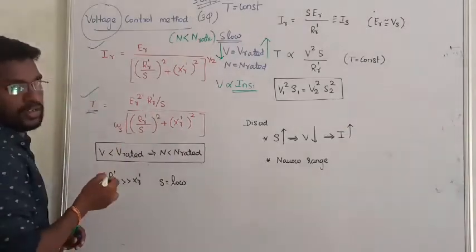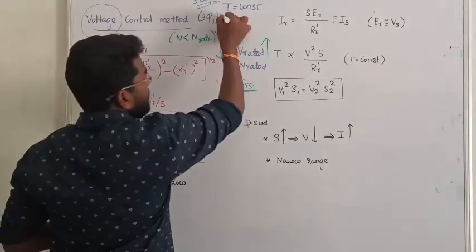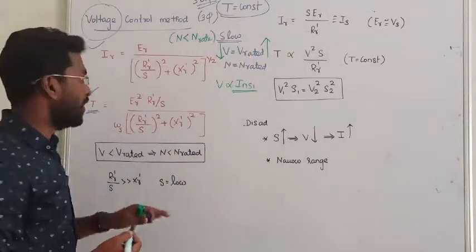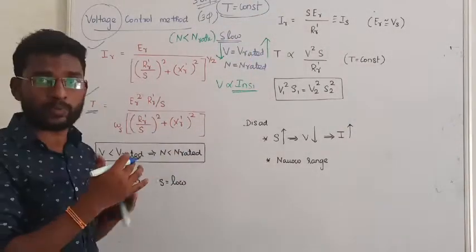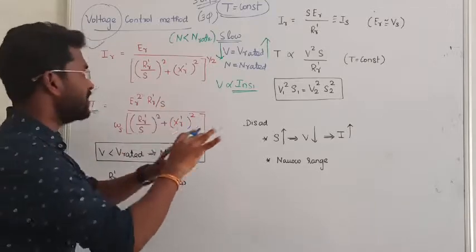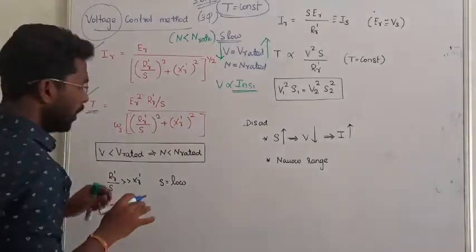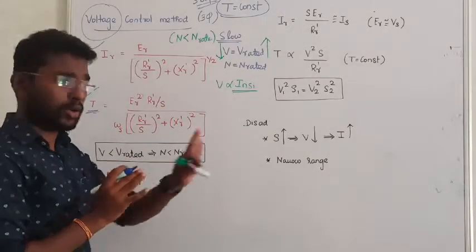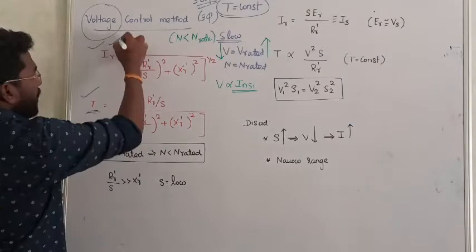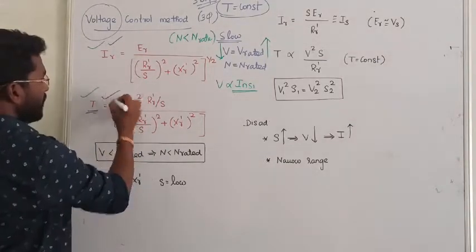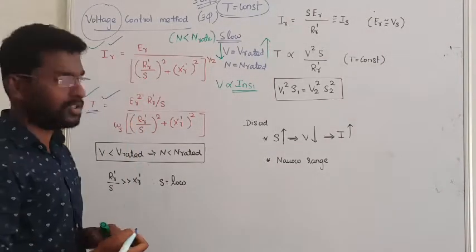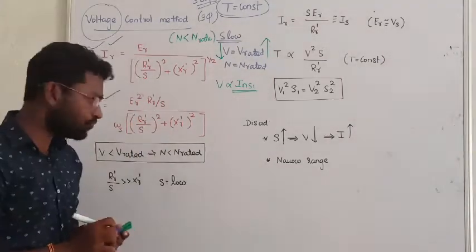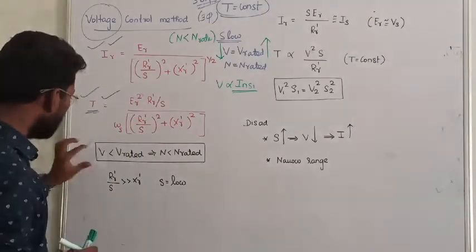So torque is always constant — keep that in mind when controlling the speed of the induction motor. Now, the induction motor has a running condition where slip has a certain value. We have the standard rotor current equation and the torque developed by the induction motor, which is the electromagnetic torque.